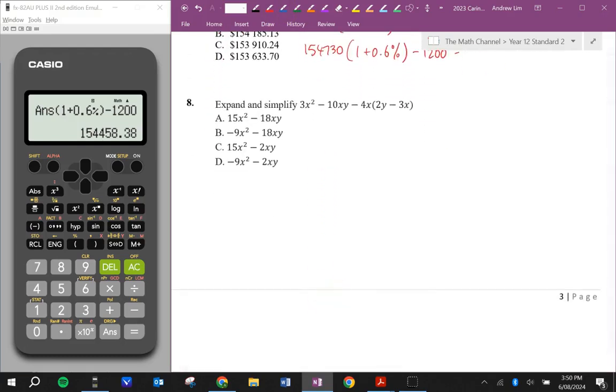Expand and simplify. So here we need to expand the brackets first. So we have 3x squared minus 10xy. Minus 4x times 2y is minus 8xy. Minus 4x times minus 3x is positive 12x squared. So we can see we've got two like terms here. 3 plus 12 is 15x squared. Minus 10 minus 8 is minus 18. So the answer is A.